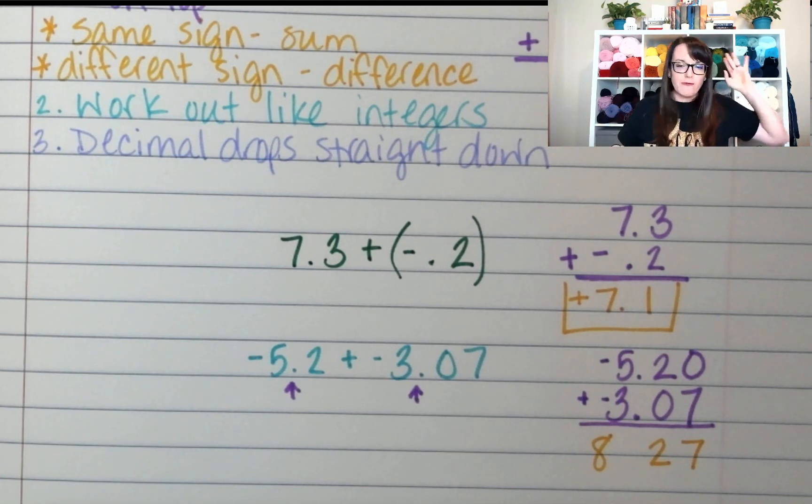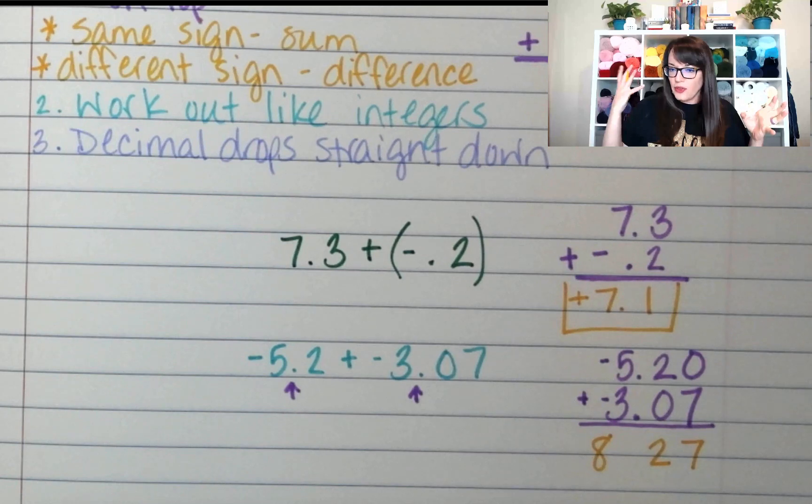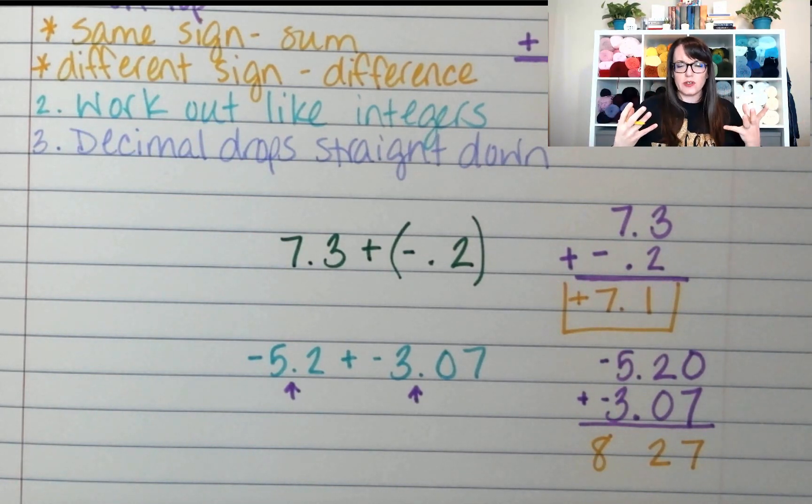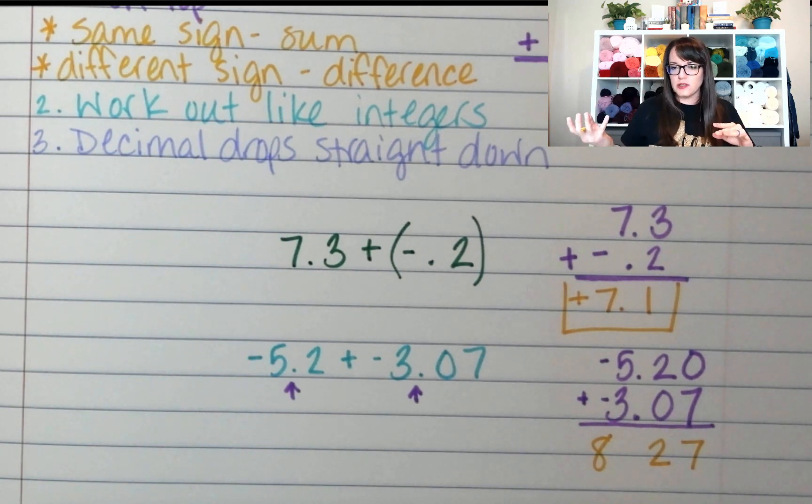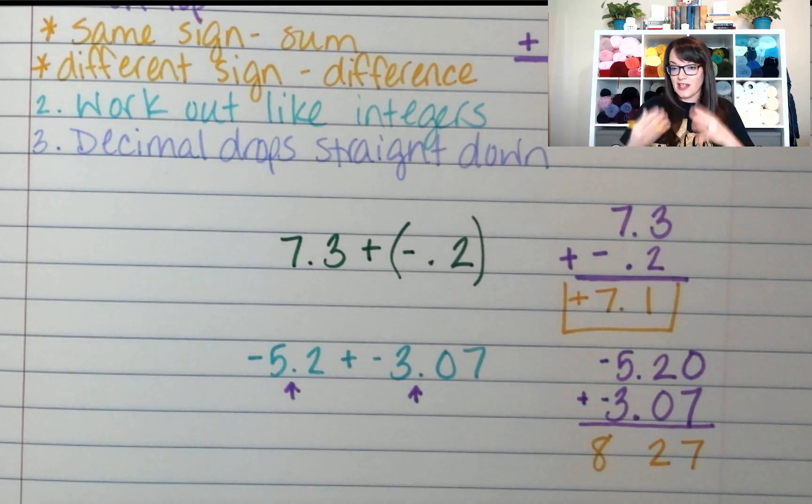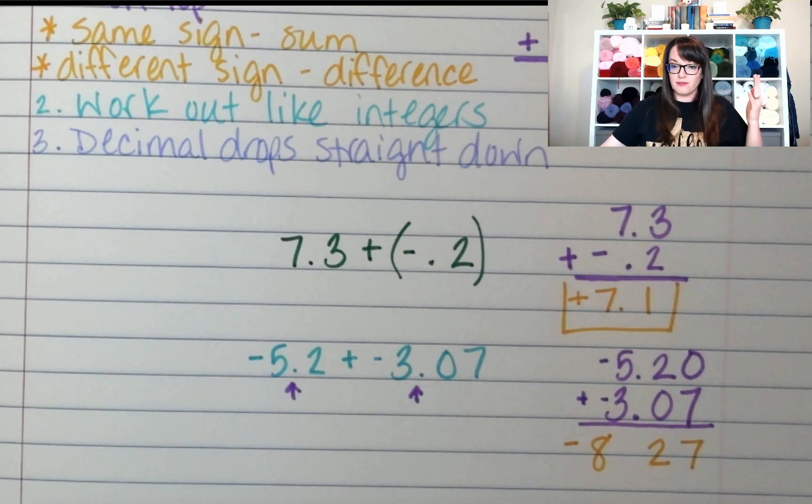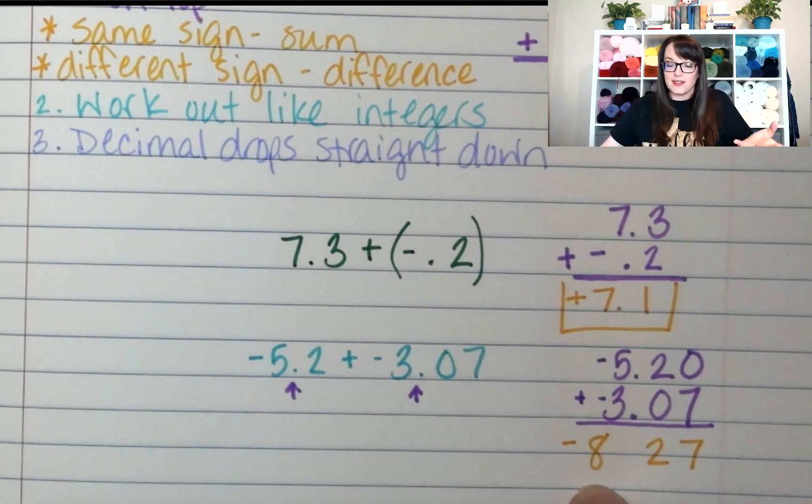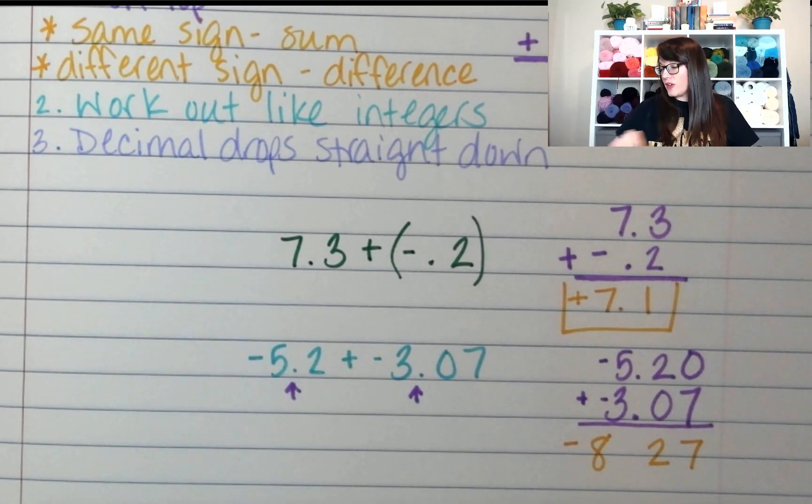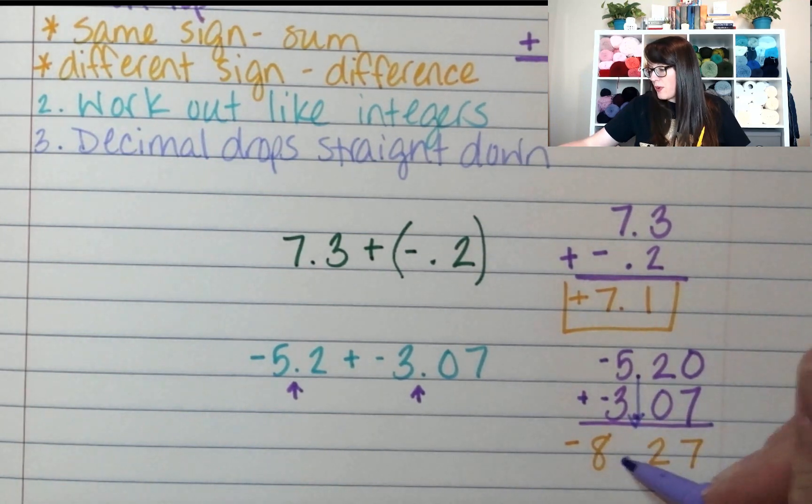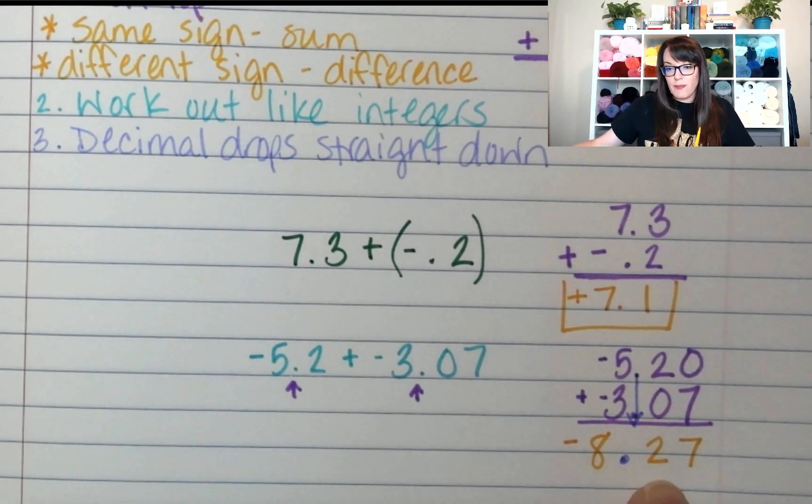So if I had 5.2 negatives and I added 3.07 negatives to that, do I have negatives or do I have positives? If I'm following my integer rules and I put negatives with more negatives, they just stay negatives. So this stays a negative. Negative 5 and negative 3 makes negative 8 when I'm adding them together. And then don't forget that my decimal drops straight down to separate my ones place from my tenths place.